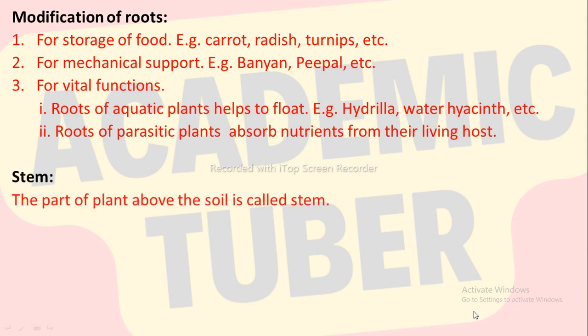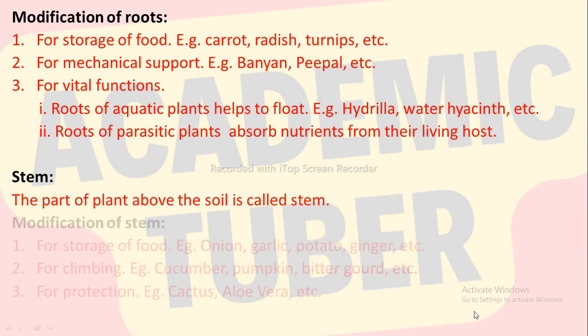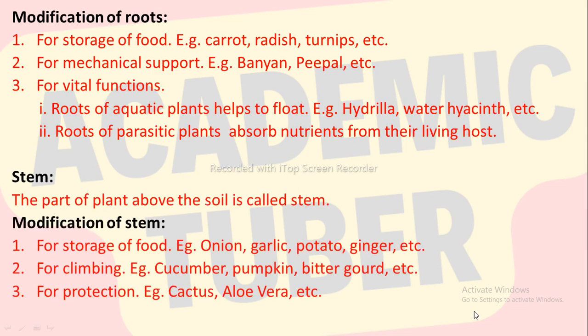Stem. The part of plant above the soil is called stem. Modification of stem: stems of plants are modified for storage of food, for example onion, garlic, potato, ginger, etc.